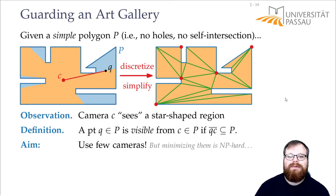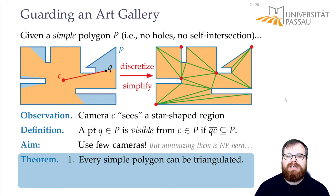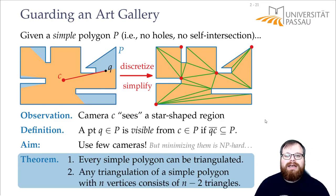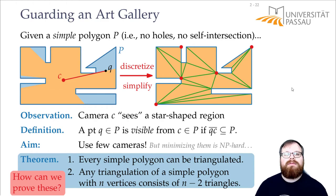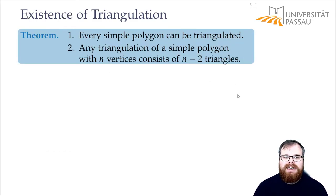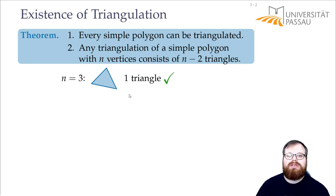The theorem states that we can triangulate every simple polygon. So however this polygon looks like, we can always add edges inside such that every face or every sub-region becomes a triangle. And second, we get exactly n minus two triangles if the input polygon has n corners. How can we prove this theorem? We will prove both statements at the same time using induction. We will start with a polygon that has exactly three corners. That's the smallest number we can have. This is automatically a triangle. And this is also one triangle.